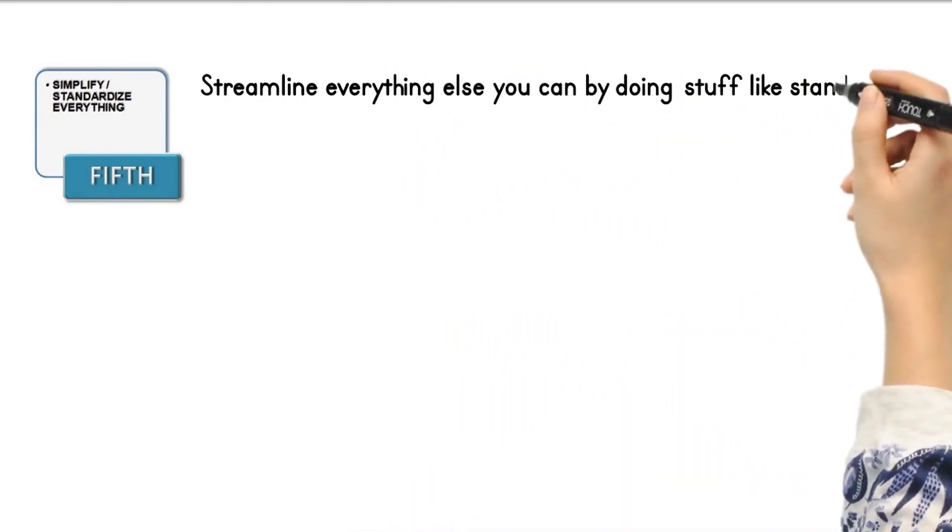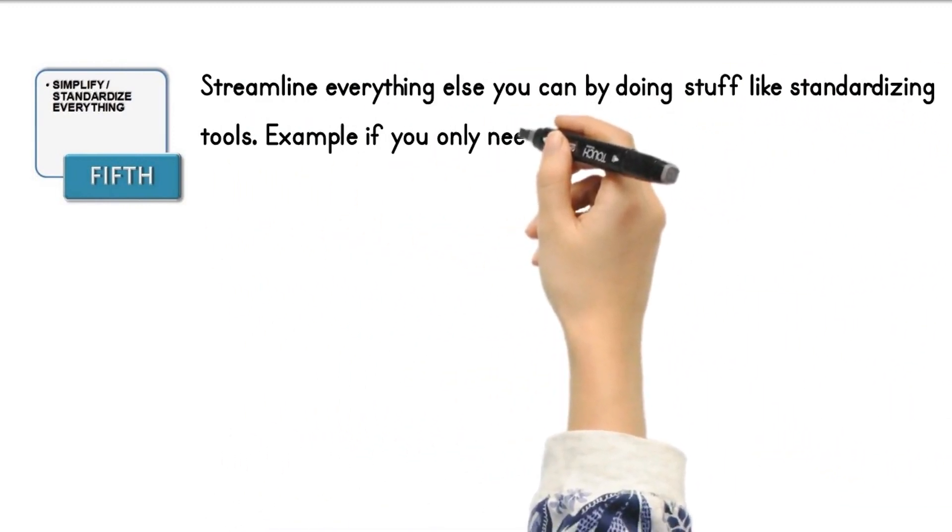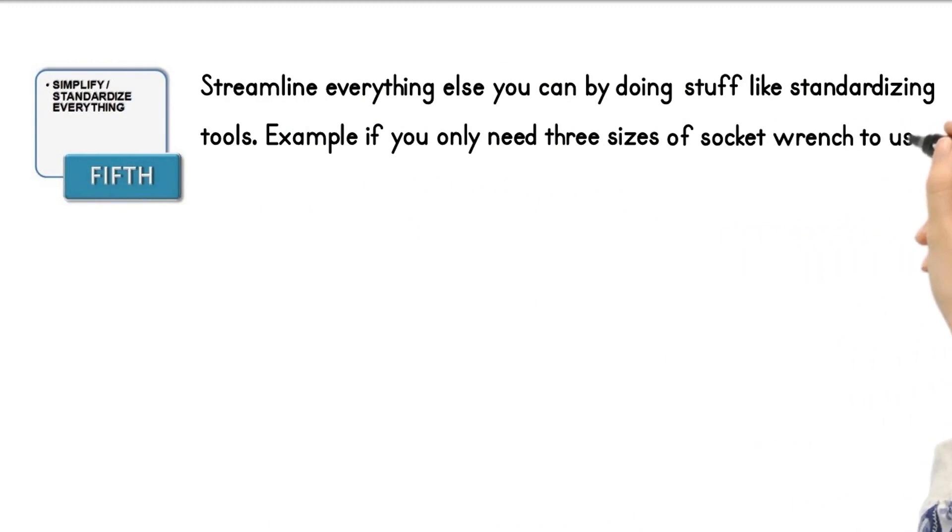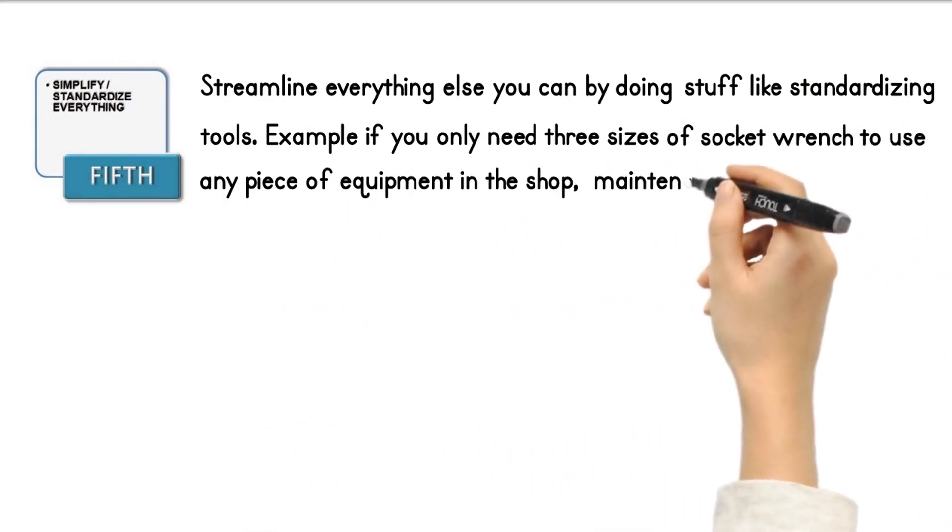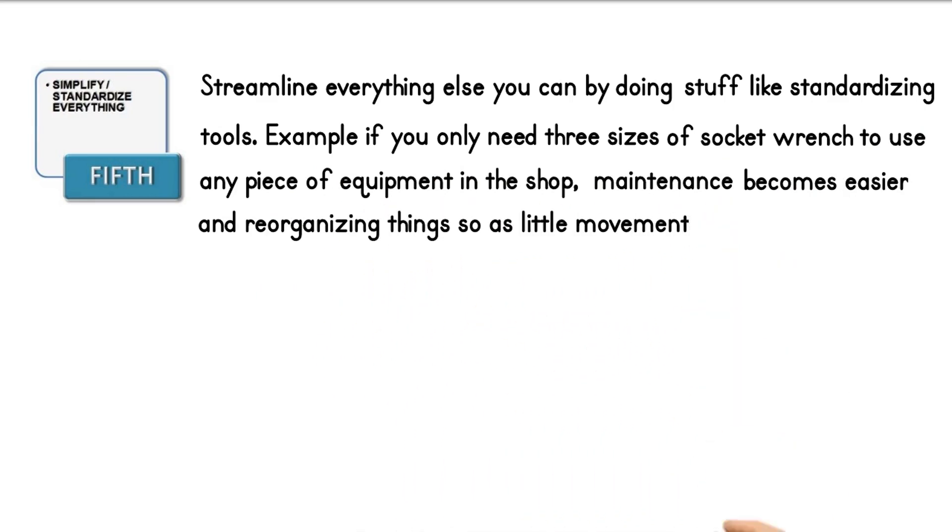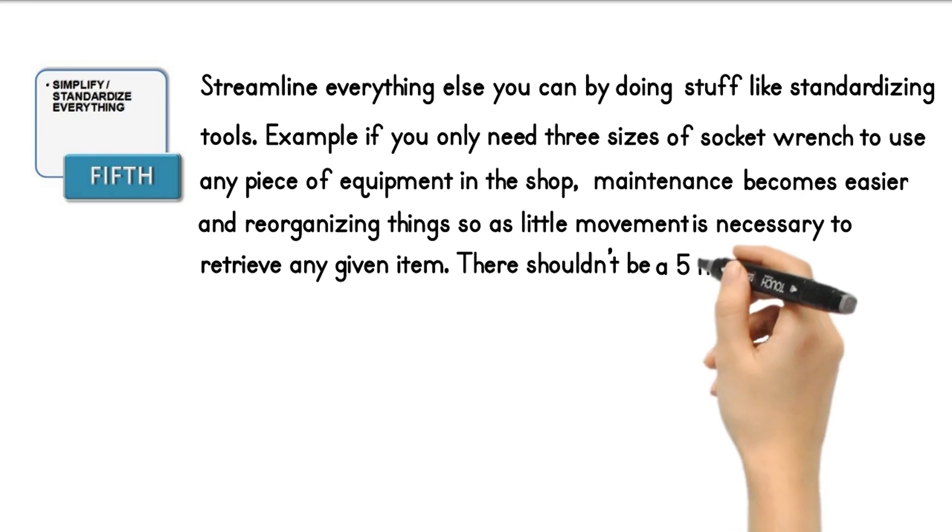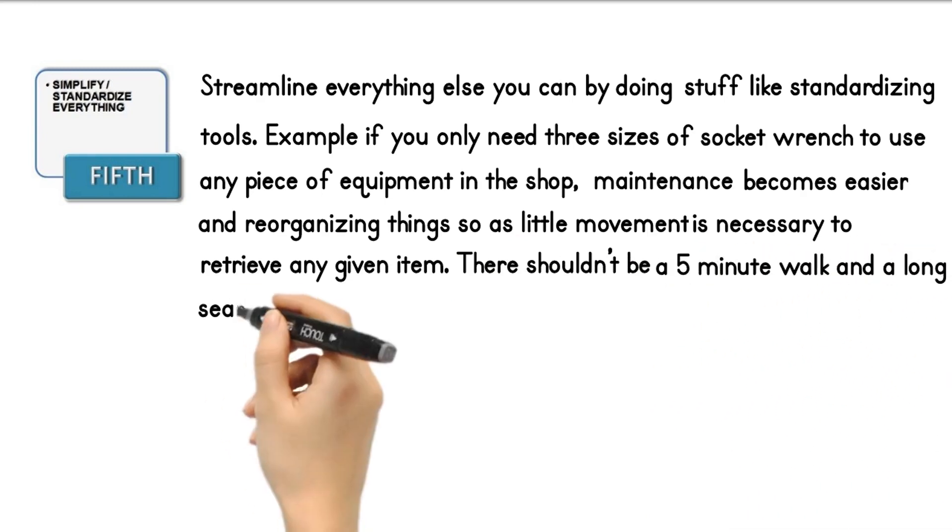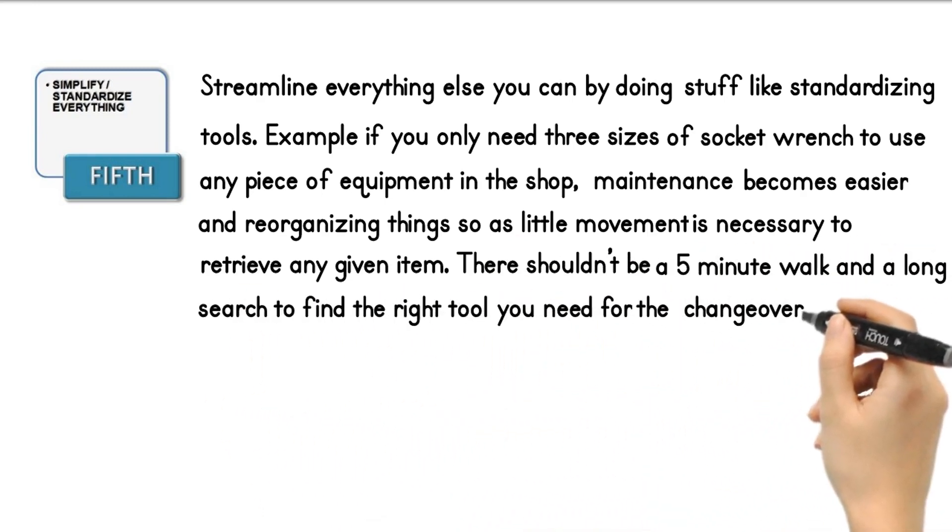Fifth step: Streamline everything else you can by doing things like standardizing tools. For example, if you only need three sizes of socket wrench to use on any piece of equipment in the shop, maintenance becomes easier. Reorganize things so as little movement is necessary to retrieve any given item. There shouldn't be a five-minute walk and a long search to find the right tool you need for the changeover.